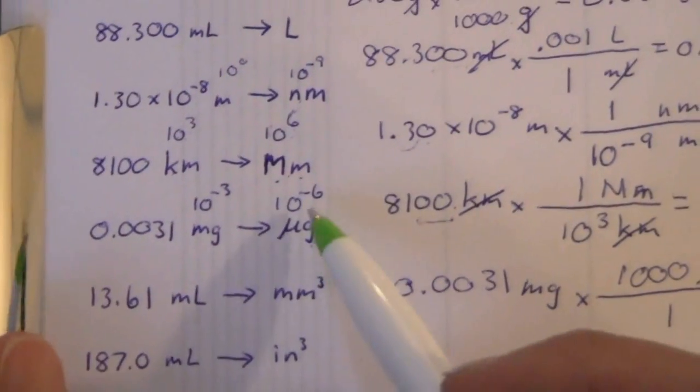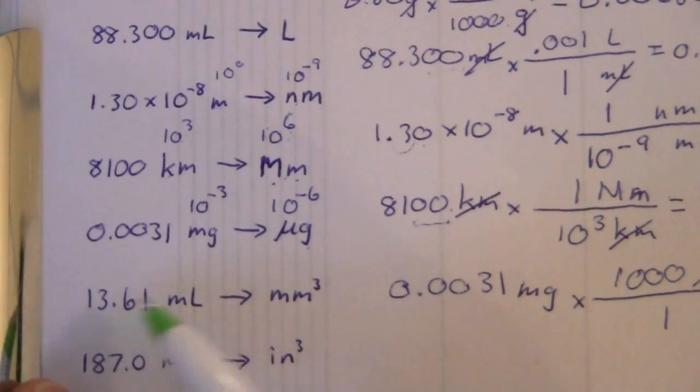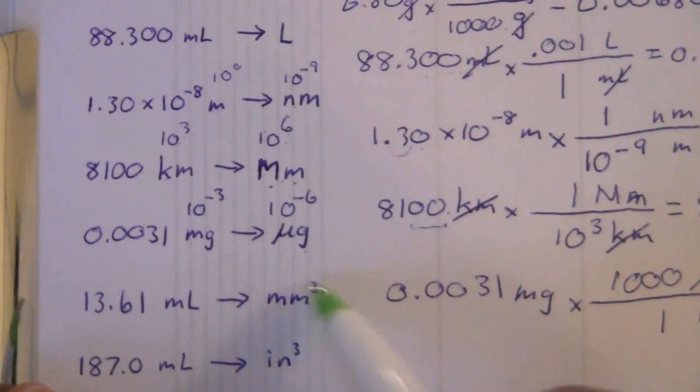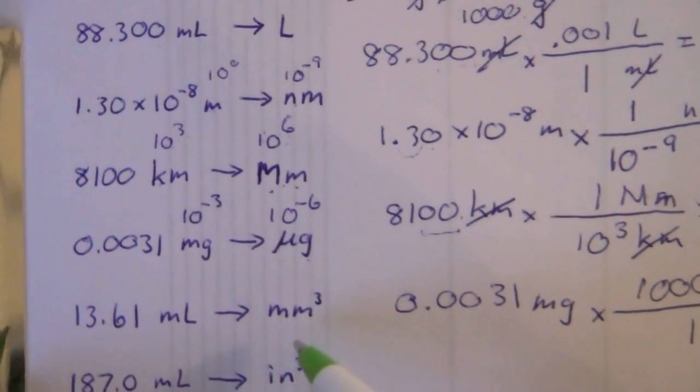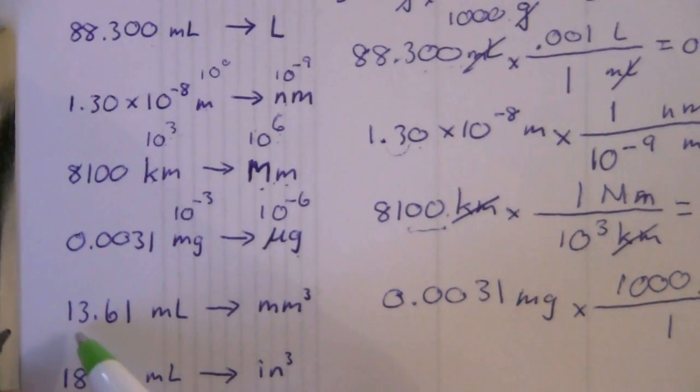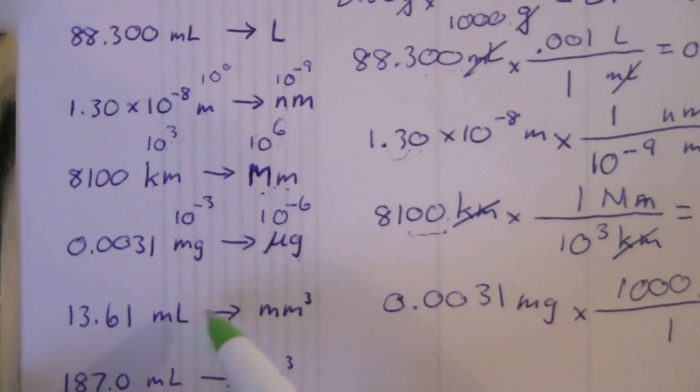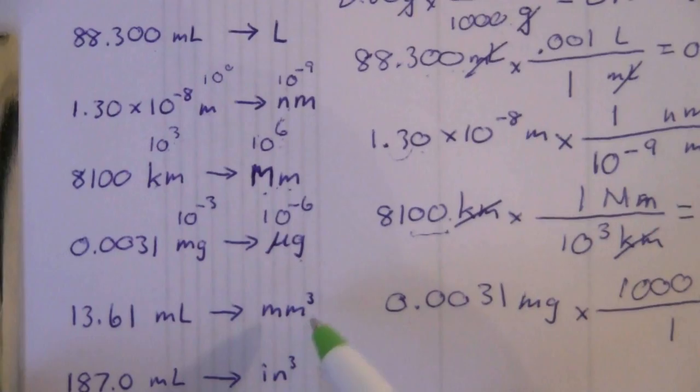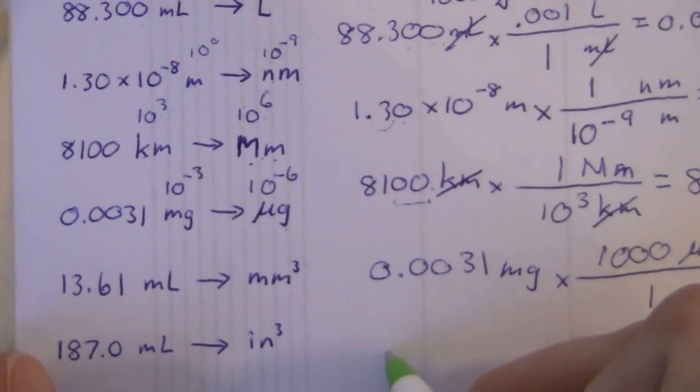Alright, next we have volume units and I threw in a cubic unit here just for a little practice. We have a couple of those: 13.61 milliliters to cubic millimeters. This one is a little bit more involved.